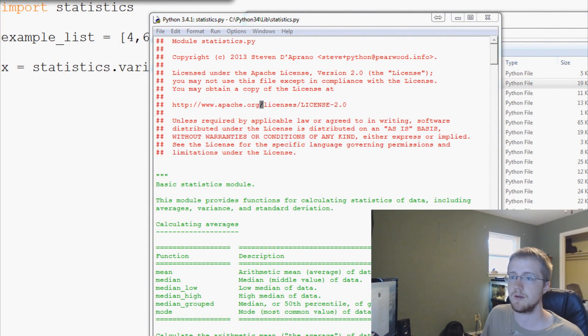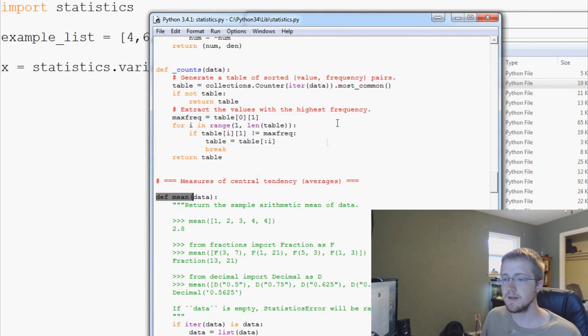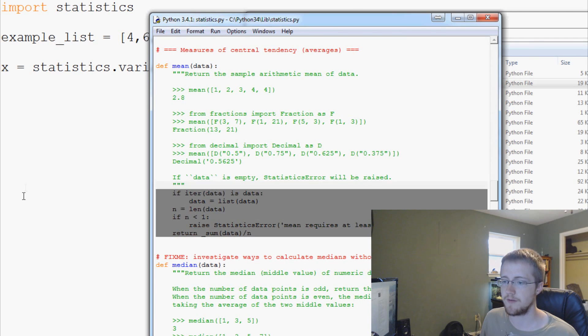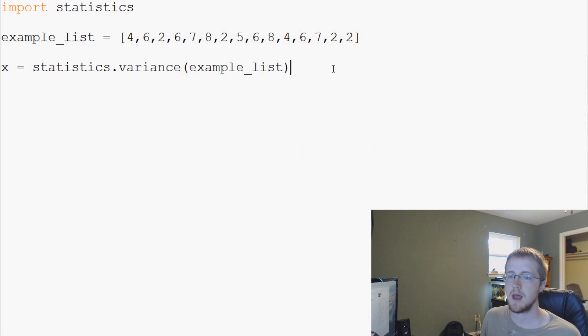And we can find, say for example, the mean module. We can search for like define mean like that, and here is our mean function. So this is the block of code that is run when we reference mean. That's all it is, it's just a Python script. So we'll get out of here, minimize this.